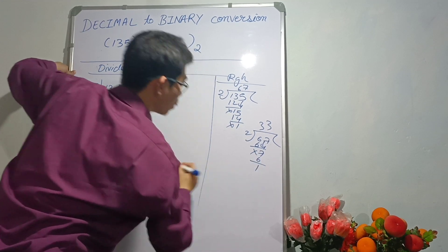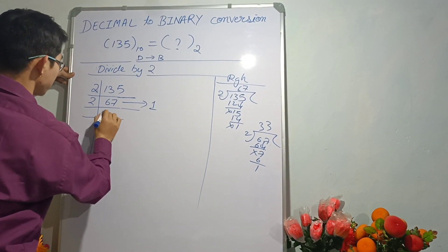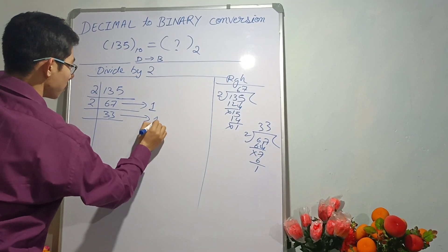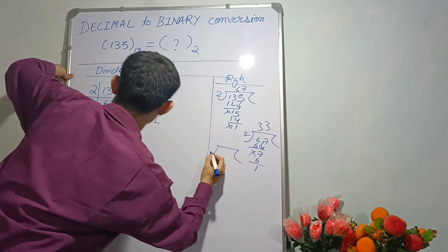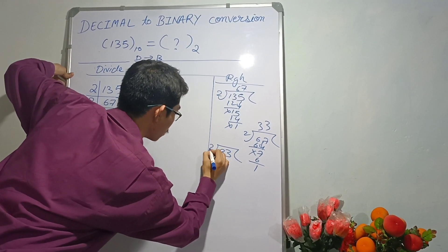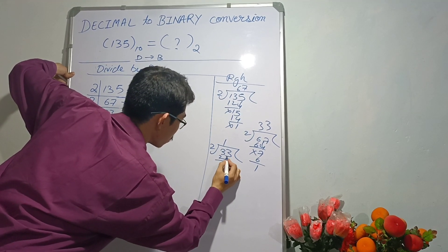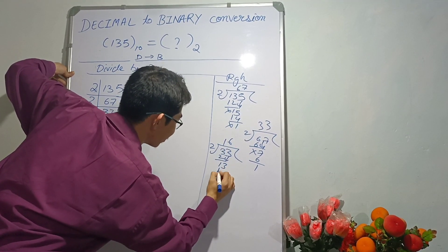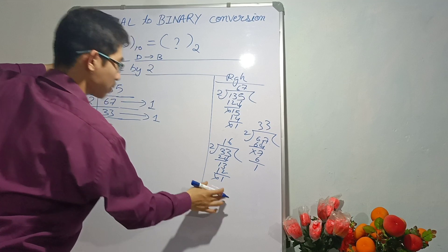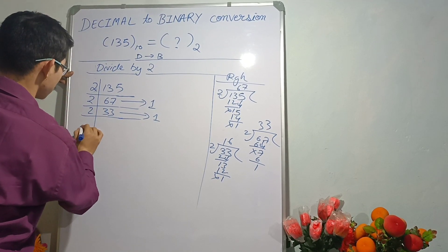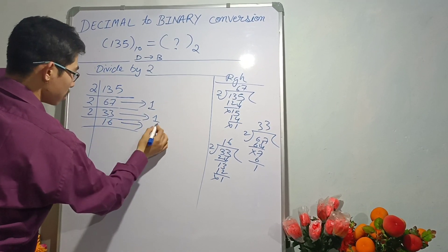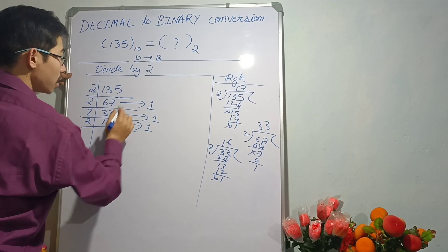2 into 33, remainder is 1 here. This 2 into 1... 2 times 6 is 12, so it means 2 into 16, remainder is 1 here. And do this one.